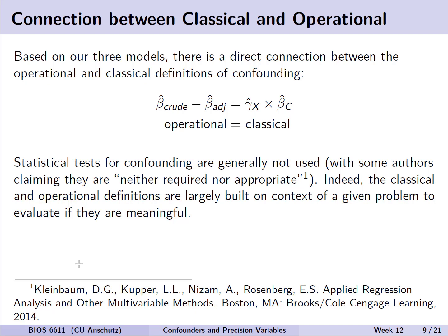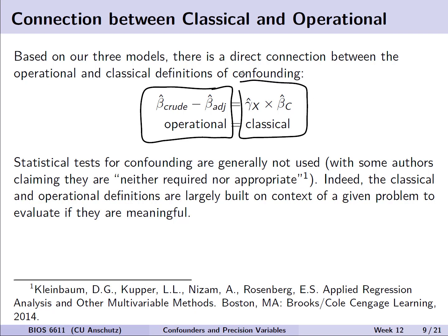There is a direct connection between the classical and operational criteria. The operational difference of beta hat crude minus beta hat adjusted equals, in classical terms, gamma hat x times beta hat c. One important thing to note is that statistical tests for confounding are generally not used — some authors claim they are neither required nor appropriate. The classical and operational definitions are really built on context to determine if something is a meaningful confounder.